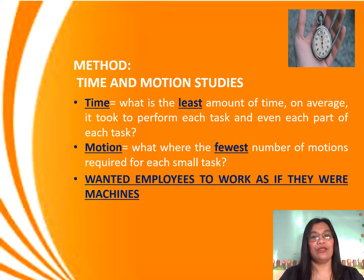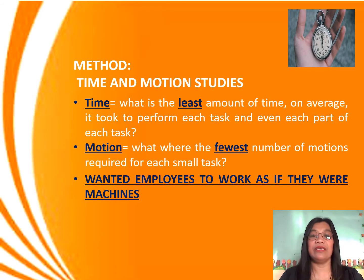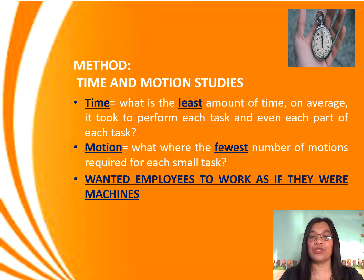Fourth, time and motion studies. Time: what is the least amount of time, on average, it took to perform each task and even each part of each task. Motion: what were the fewest number of motions required for each small task? Taylor wanted employees to work as efficiently as machines.